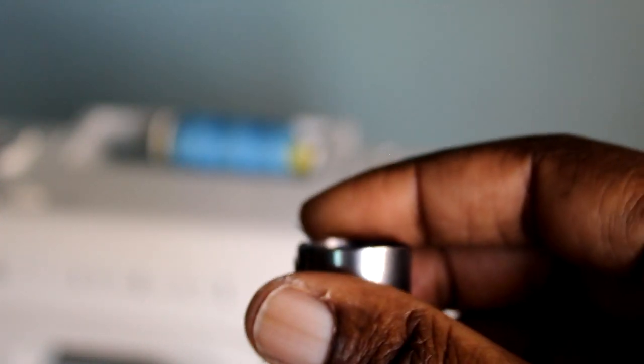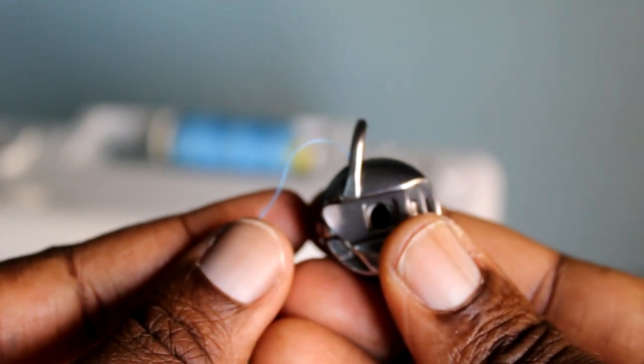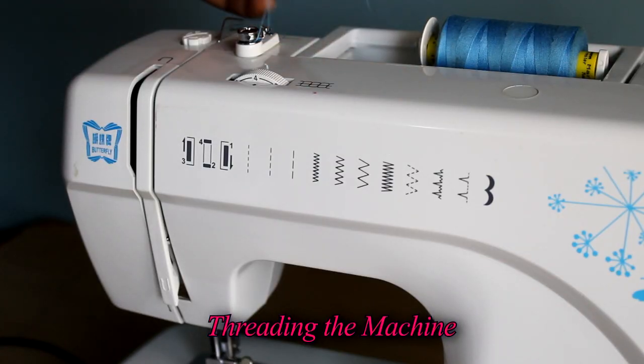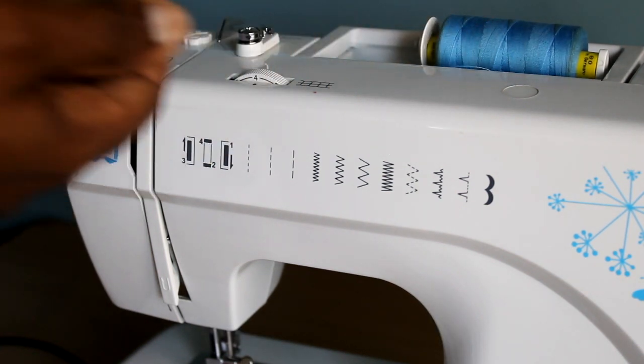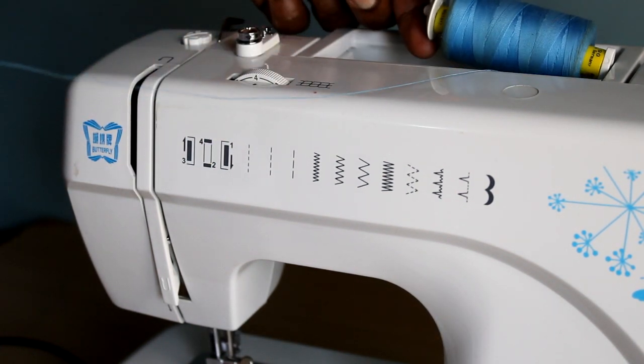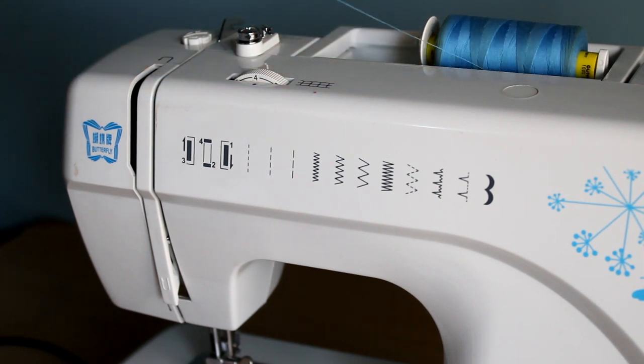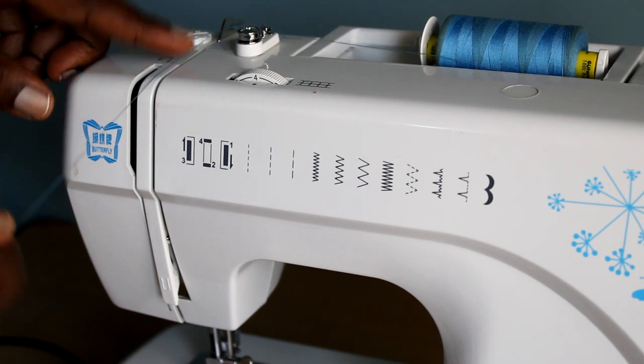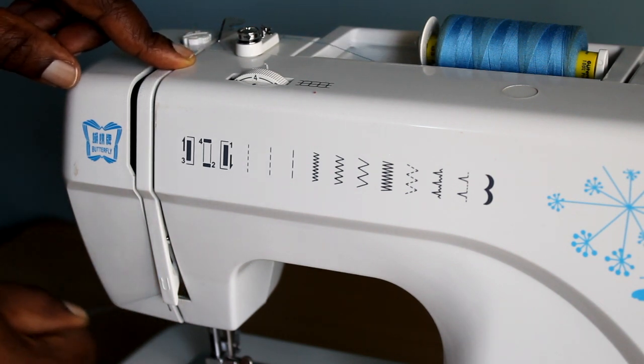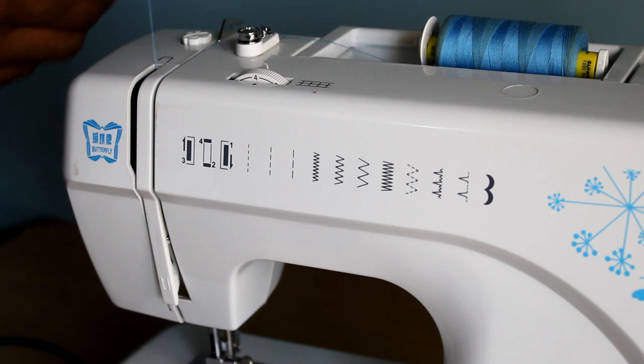Now I'm going to actually thread the machine. We have an upper thread in place already. Now we're just going to pass it through the thread guides that you have on your machine. They're usually diagrams, it's nothing complicated, just follow the arrows and go in the right direction. Mine just goes straight and around that thread guide, then it's going to go down and around and back up.